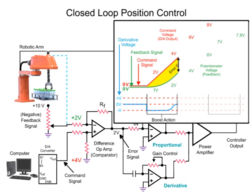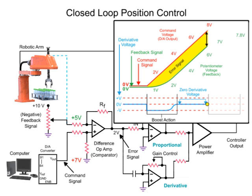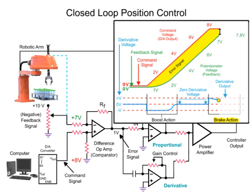The error becomes constant when the potentiometer indicates that the robotic arm's position is changing at a constant rate of the command signal. At this time, the derivative voltage changes to zero volts and the proportional amplifier continues to produce a voltage. As the command signal stops changing, the robotic arm continues to move with a decreasing error signal. As the error is reduced, the derivative amplifier output voltage changes polarity and cancels the proportional voltage. If the error signal decreases too fast, the derivative voltage will be greater than the proportional voltage, reversing the polarity of the power amp and creating a brake condition to prevent overshooting. As the arm continues in motion, the feedback voltage nears the command voltage, the error signal decreases, and the arm motor speed decreases.